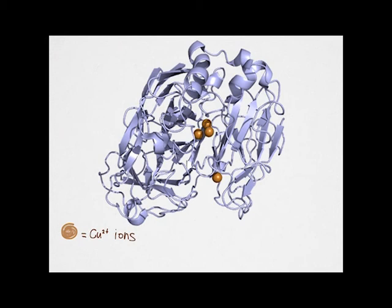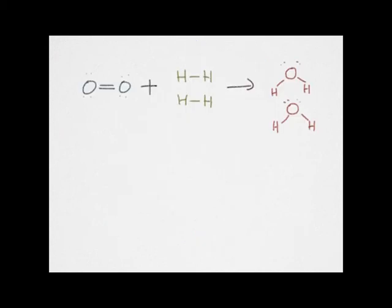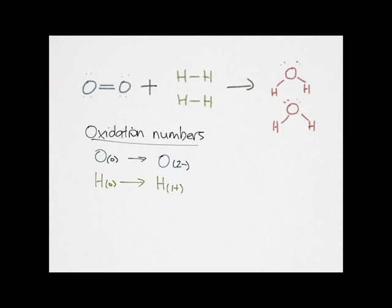Laccases are multi-copper containing enzymes capable of performing one electron oxidation of a broad range of substrates. They are able to oxidize both phenolic and non-phenolic ligand compounds, and because they use molecular oxygen as the final electron acceptor, only water is released as a byproduct, so it produces far less chemical waste than other alternatives.